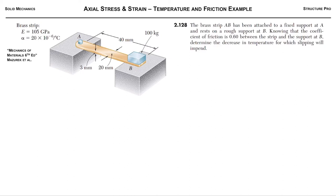Hey everybody, here with another example problem to sharpen your skills. So in this case we got this brass strip here and we're asked to calculate a decrease in temperature for which slipping will impend. That's a fancy word, but when will slipping occur, at how much of a decrease in temperature from the current temperature.